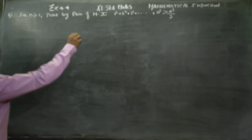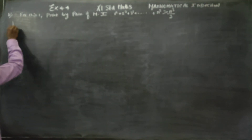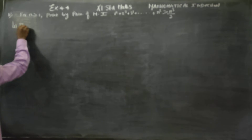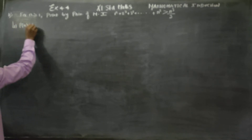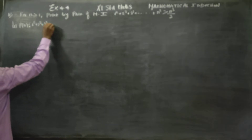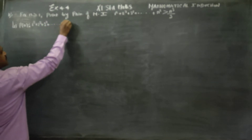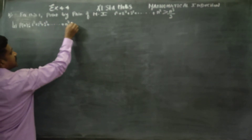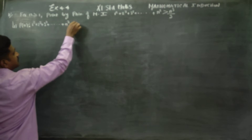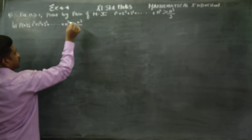First I am going to name the statement. Let P of n be: 1 squared plus 2 squared plus 3 squared dot dot dot plus n squared is greater than n cubed by 3.